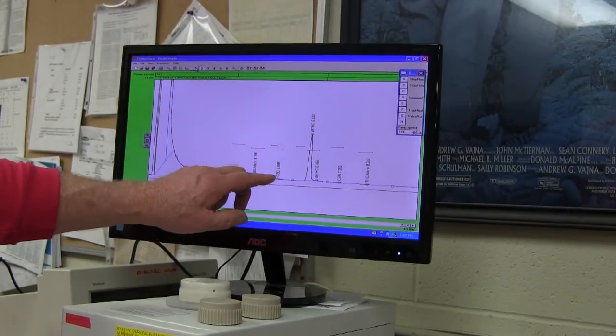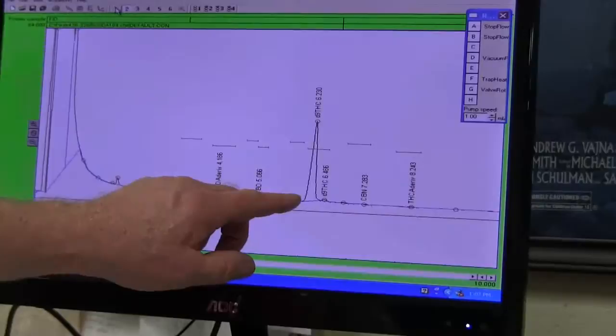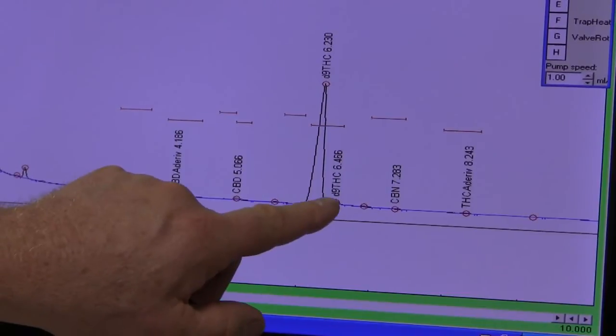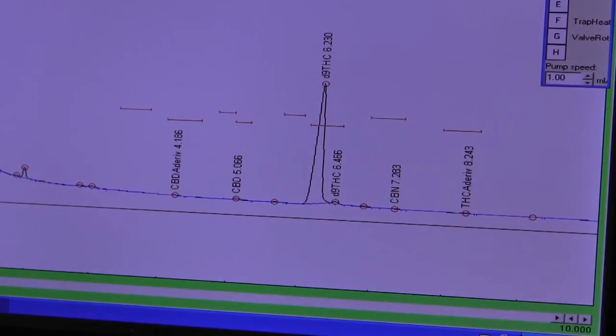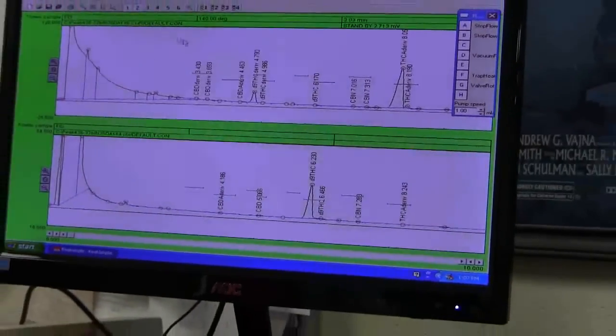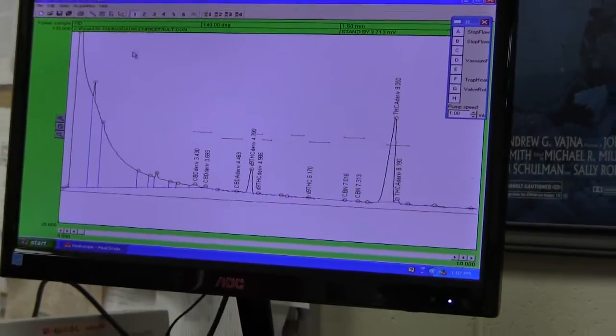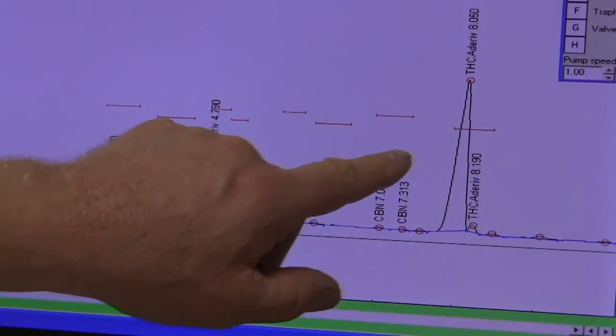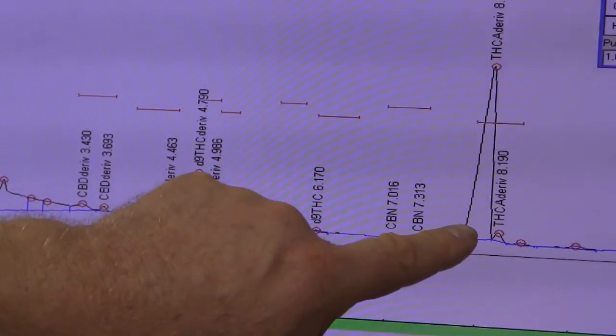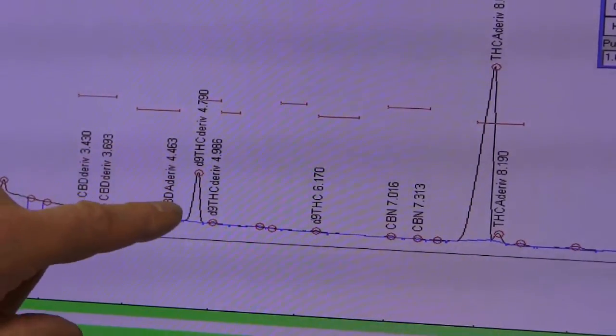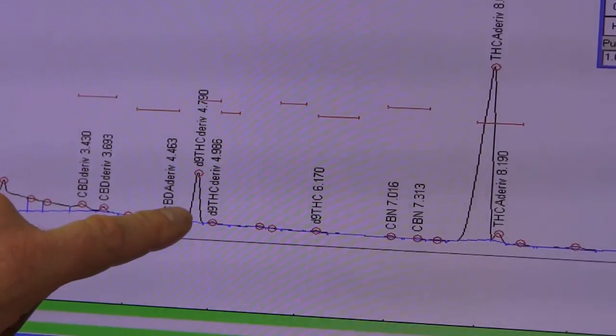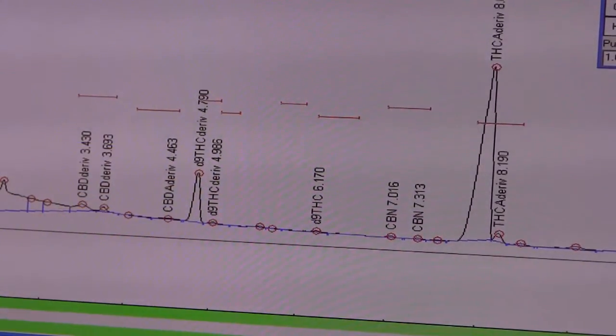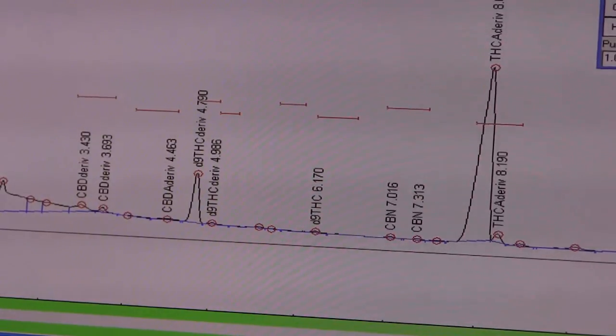So injecting the underivatized cannabis extract, you can see that we get a very large delta-9 THC peak with a small amount of CBD, CBG, and CBN. Now when we do the same sample but derivatize it, you can see that now there's really almost no delta-9 THC, but instead we have a large THCA derivatized peak and a smaller delta-9 derivatized peak. So you can see the ratio of the THCA to the delta-9 that was present in the fresh cannabis flower extract.